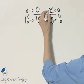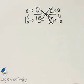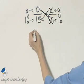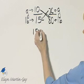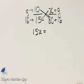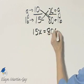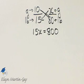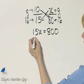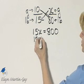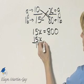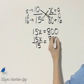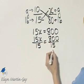So let's solve this by cross-multiplying. I have 15X is equal to 10 times 80. That would be 800. And let's solve this now for X. To do so, I'll divide both sides by the coefficient of X, which is 15. Left side by 15, right side by 15.